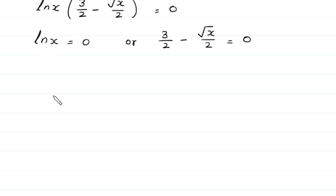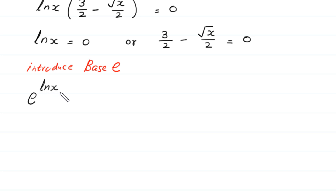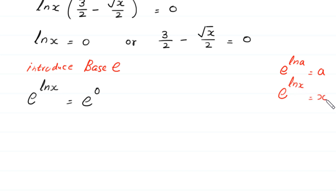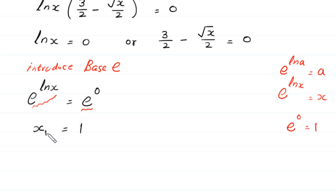From ln of x equals 0, because the base of the natural log is e, we introduce base e on both sides: e to the power ln of x equals e to the power 0. According to the property e to the power ln of a equals a, we get x equals 1, since e to the power 0 equals 1. This is the first value of x.